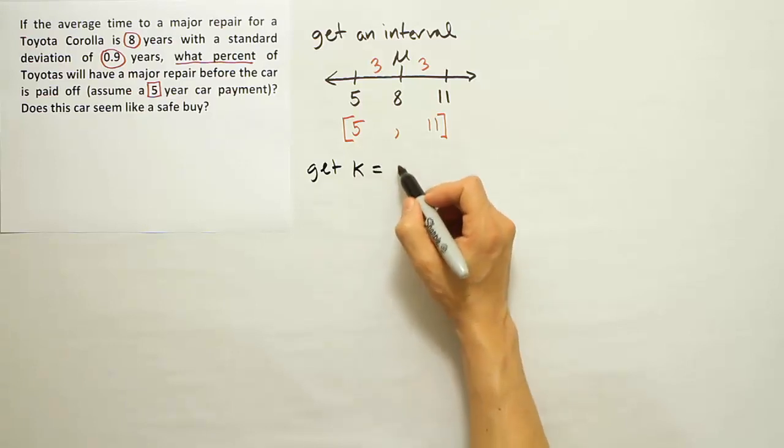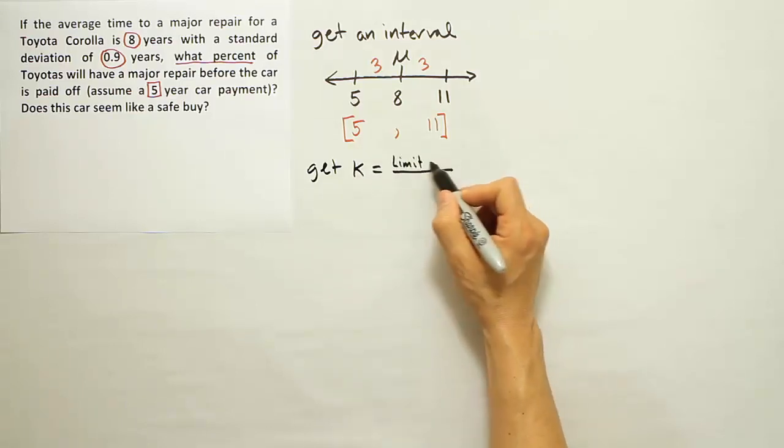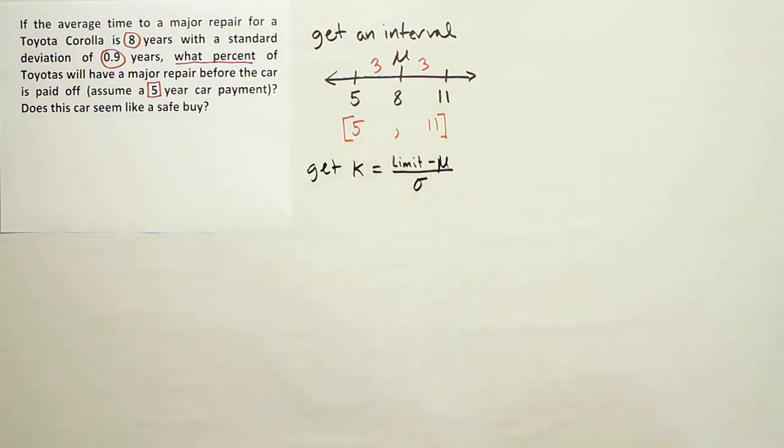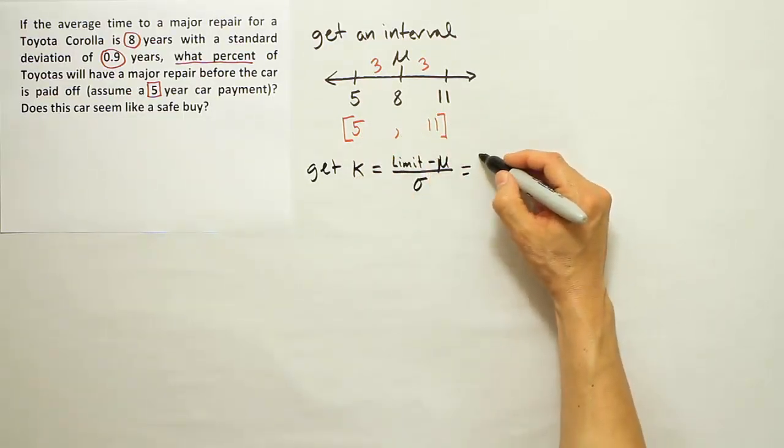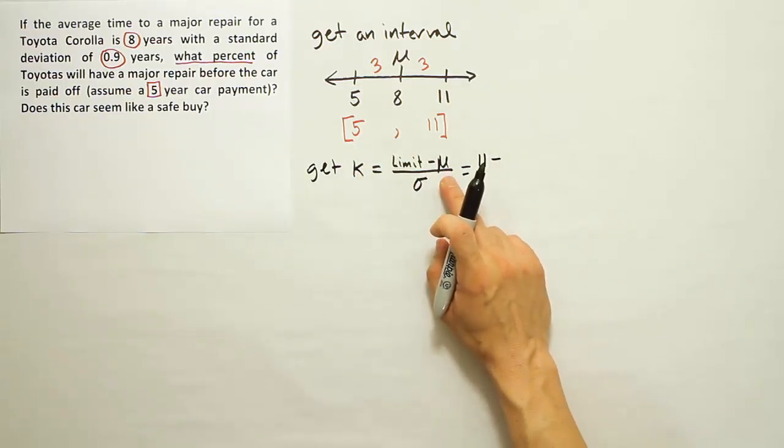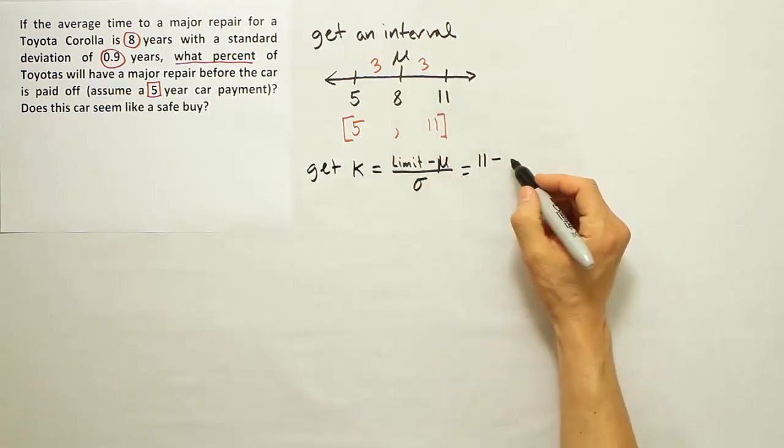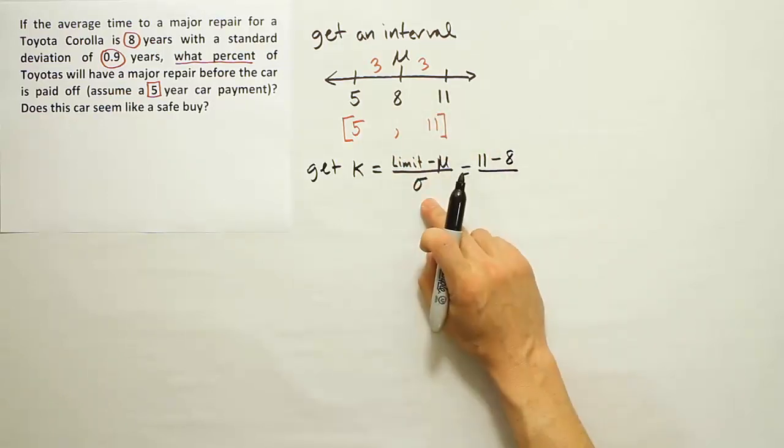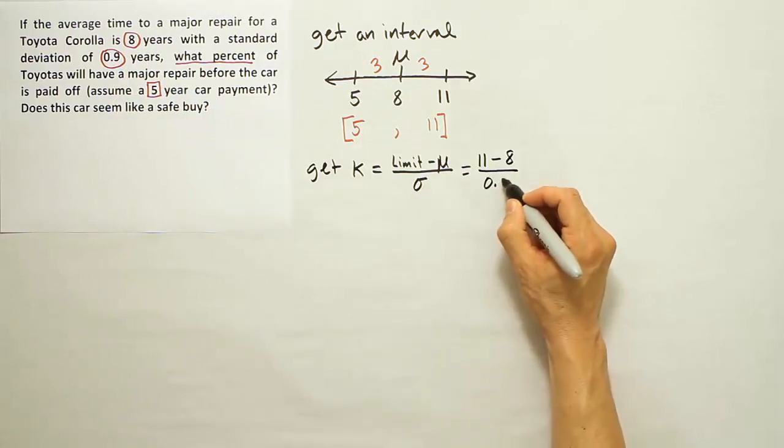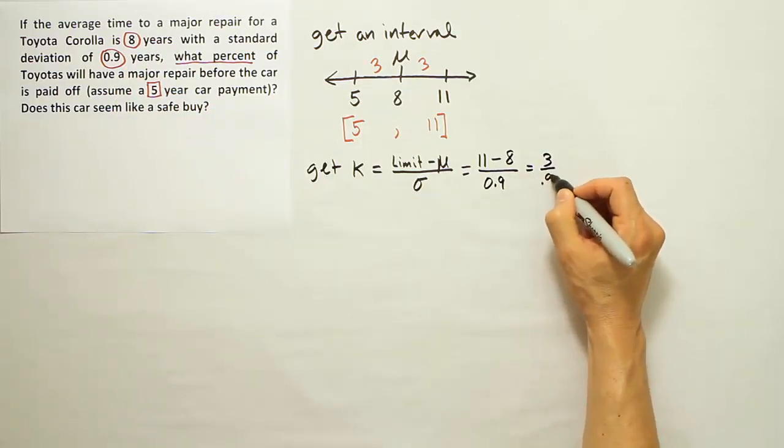So recall we use this formula: k is the limit minus the mean over sigma. Remember, I'm using limit to refer to either the upper limit or the lower limit for the interval that we've created. And it's often best to work with the upper limit so you get a positive k. Although, again, the lower limit gives you the same value, just negative, right? Take away the mean. The mean we said was 8. Standard deviation is 0.9 from the problem.